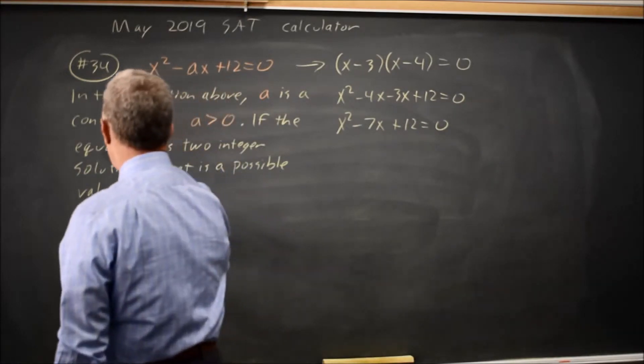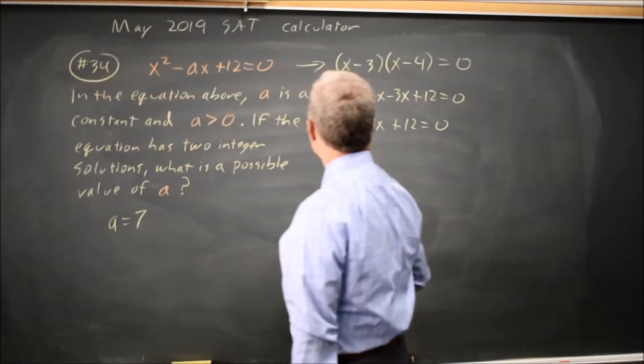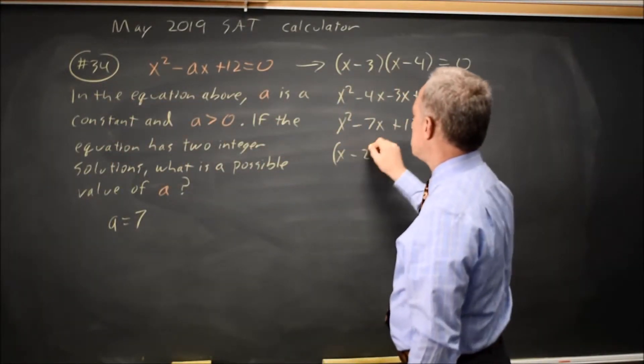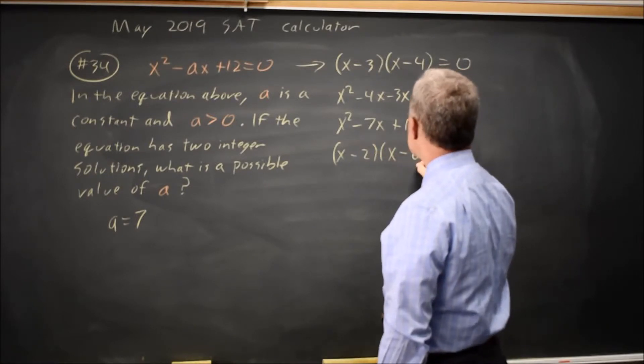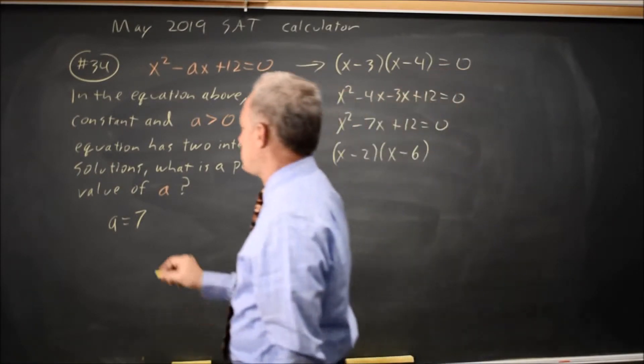And for my choice, A equals 7. I could have also done X minus 2, X minus 6, and that would give me A equals 8.